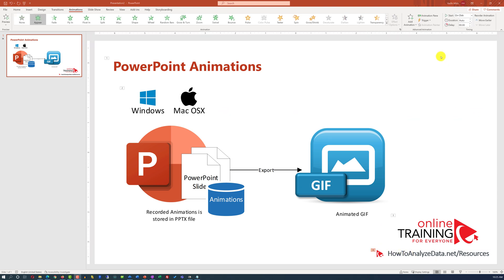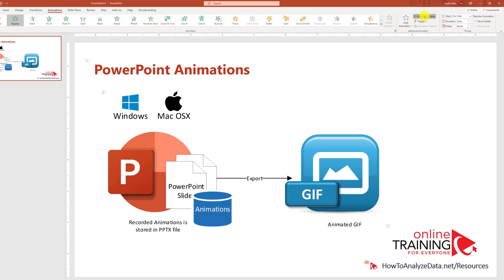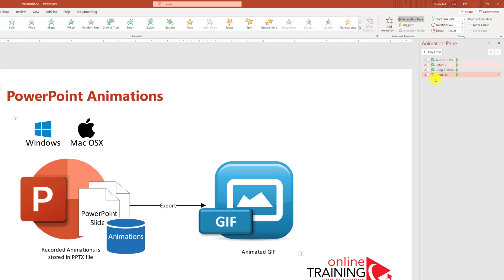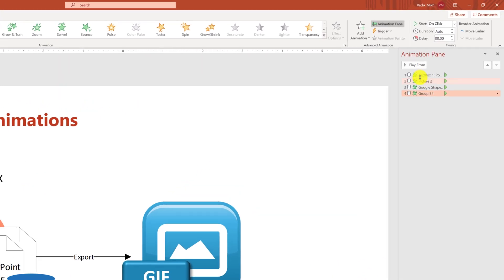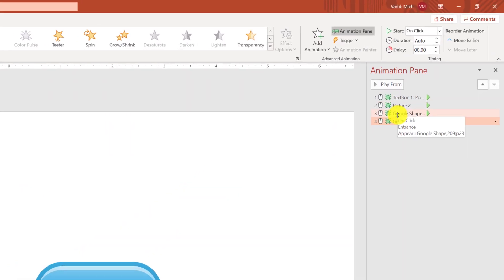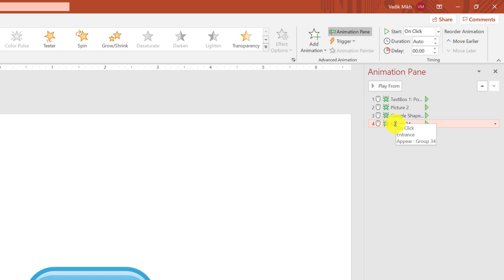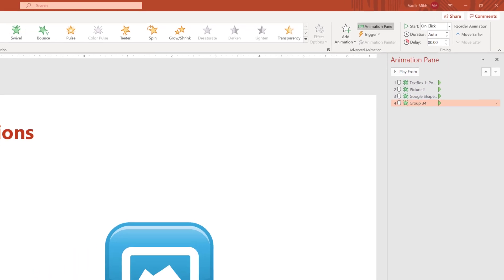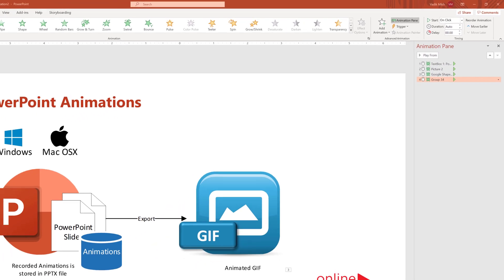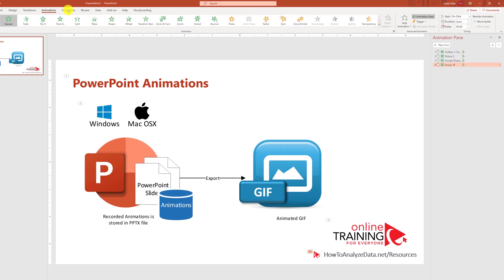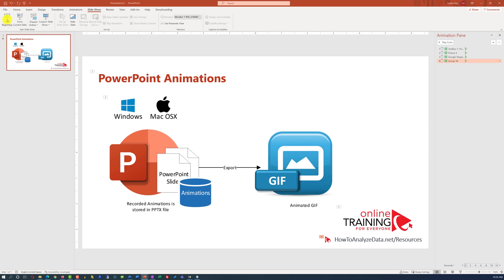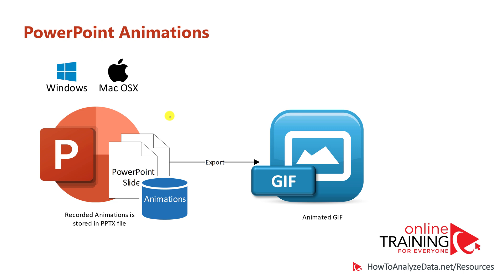If you would like to manage animations, you can navigate to the Animation Pane right inside PowerPoint, where you will see all four animations that we've just added. To play the slide and preview the animations, you can select Slide Show and click From the Beginning. Now I need to use the cursor to go through the animations.